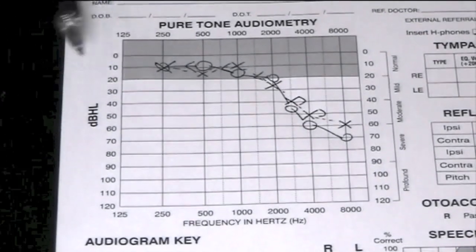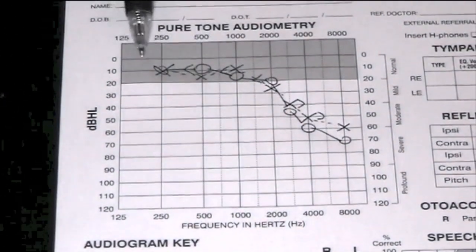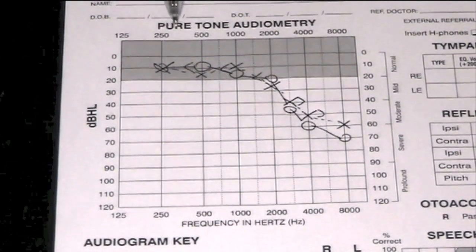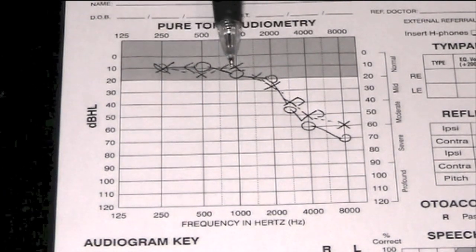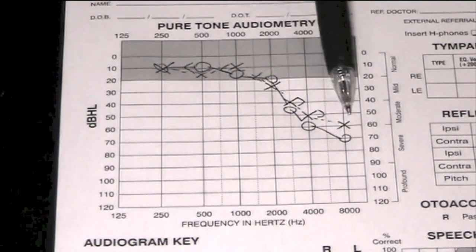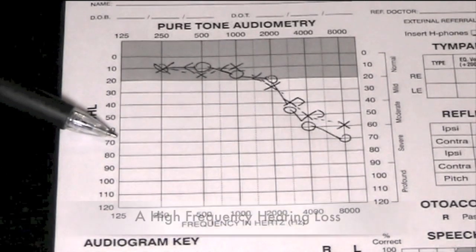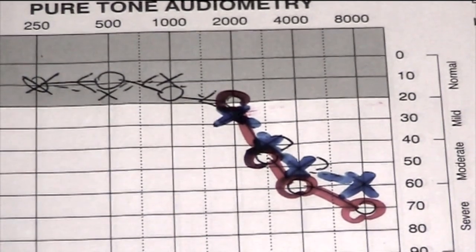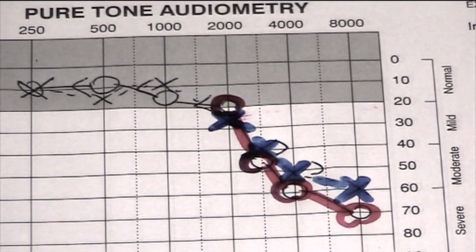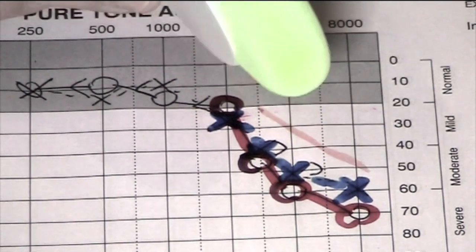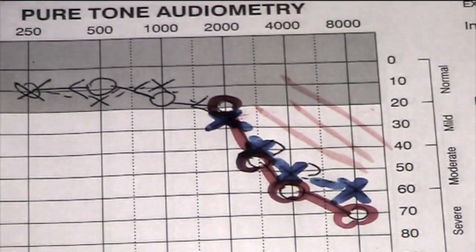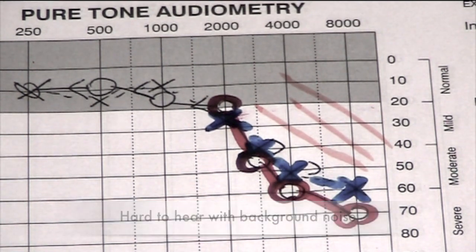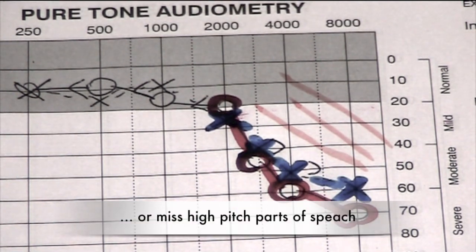On this hearing test we can see the responses start off within the normal range at the low frequencies, but as we go to progressively higher frequencies the hearing starts to drop away. We would say this person has a high frequency hearing loss. If you have a high frequency hearing loss where you can't hear in this region, you will find it a lot harder to hear people talking when there's background noise, or you'll start to miss the high pitched parts of speech.